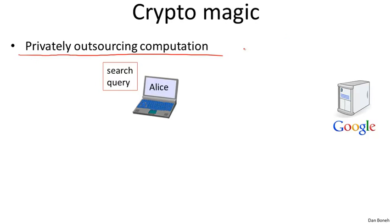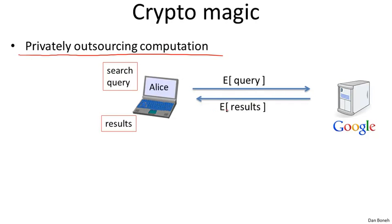It turns out there are very special encryption schemes such that Alice can send an encryption of her query to Google, and because of the properties of the encryption scheme, Google can actually compute on the encrypted values without knowing what the plaintext is. Google can run its massive search algorithm on the encrypted query and recover encrypted results, which it sends back to Alice. Alice decrypts and receives the results, but all Google saw was encryptions of her queries, so Google has no idea what Alice just searched for.